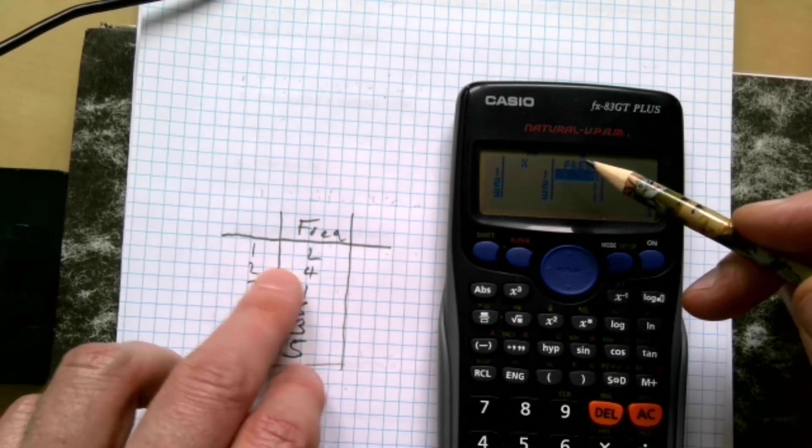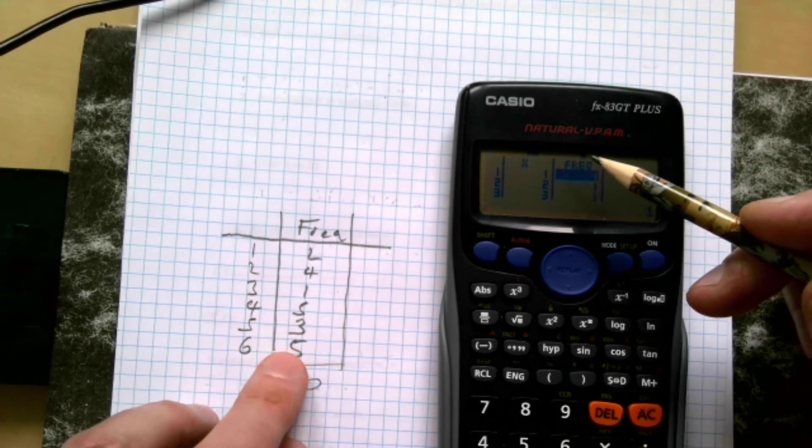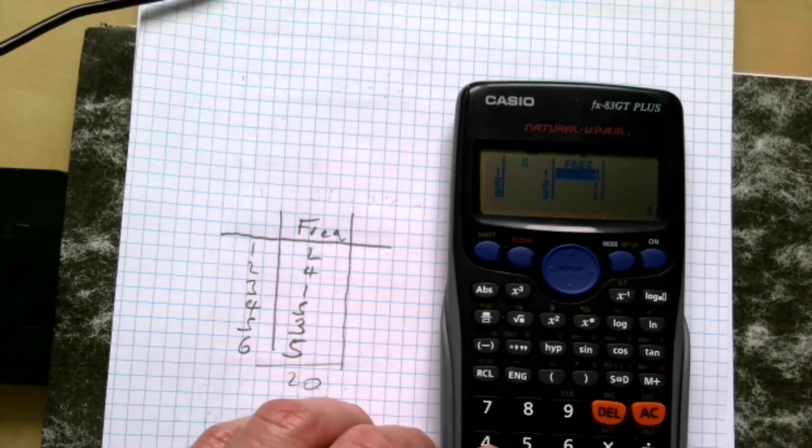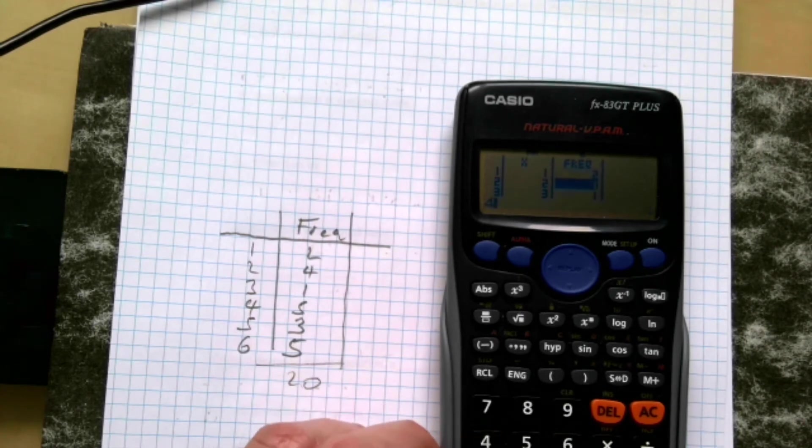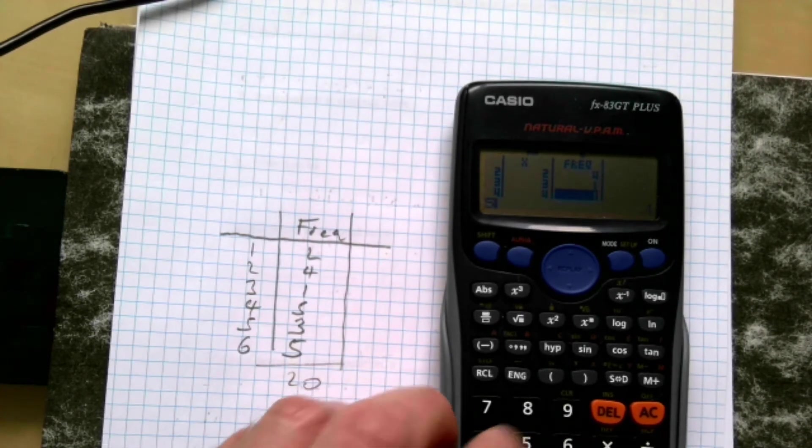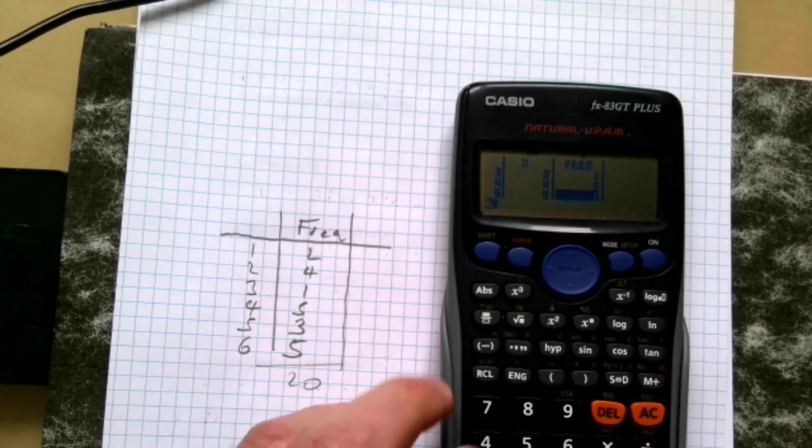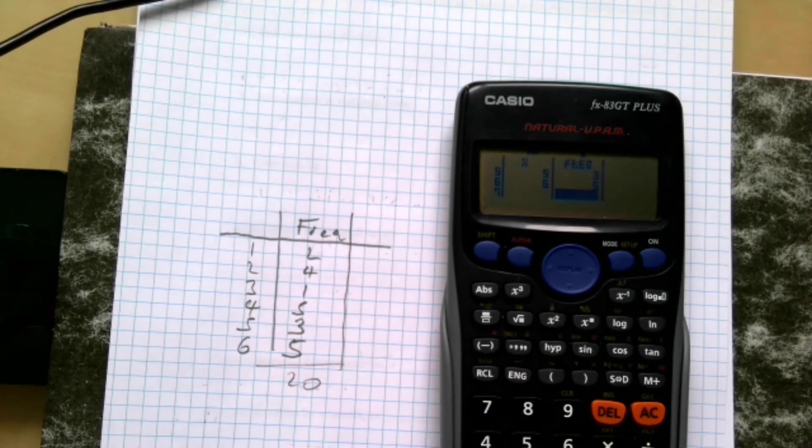Sorry if you go too high. So one then is two, so it goes two, four, one, five, three, five. So we're going to go two equals, four equals, one equals, five equals, three equals, five equals. And that's all my information then.